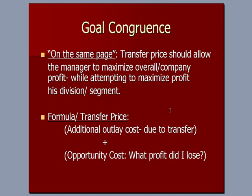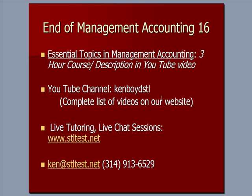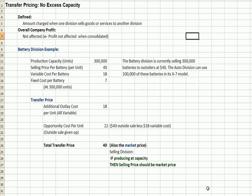The second bullet point is a formula for transfer pricing. Two things dictate transfer price: first, is there any additional outlay cost due to the transfer — is there anything extra we need to incur expenses for? And second is opportunity cost — did I lose profit, did I lose an opportunity to profit more by selling these goods to somebody else? Those two factors make up the transfer price.